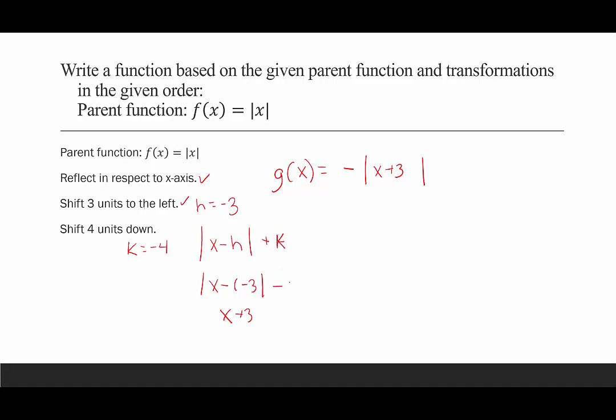That would be plus negative, which we would just say is minus. We're going to plug in minus 4. And this would be the equation for the function with those three changes from our parent function, f(x) equals the absolute value of x.